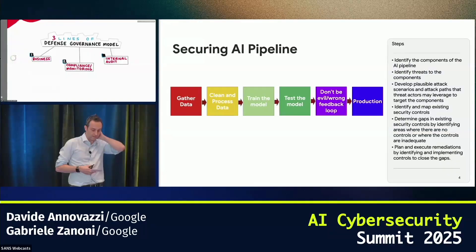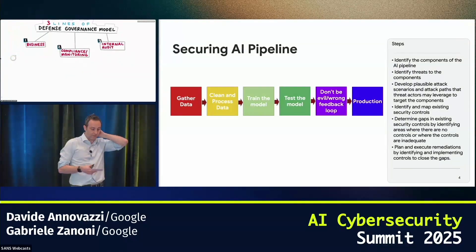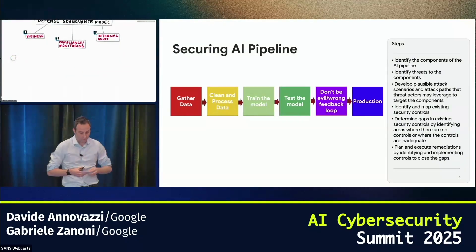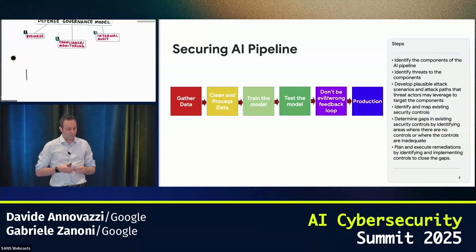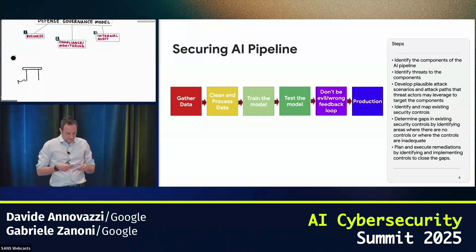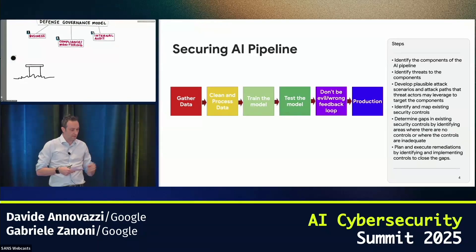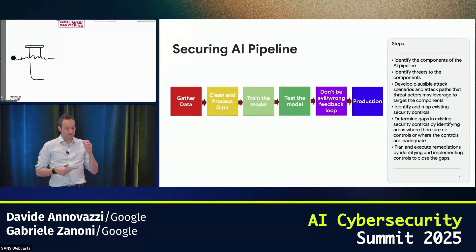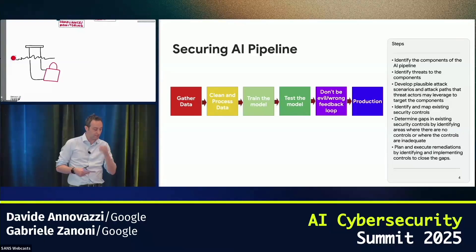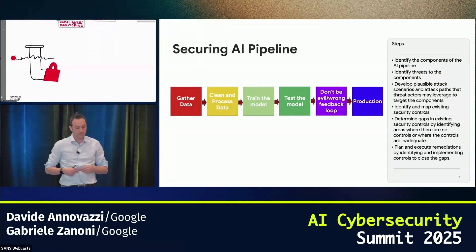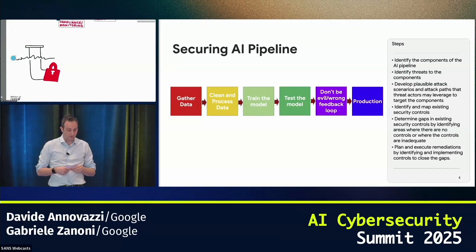After that, what we recommend is to start securing the AI pipeline. In this picture, you can see our approach to securing AI. The idea is to ensure that the collection of the data, the use of the data, and the security testing part is supervised by the security department — especially the things that are in the purple box.